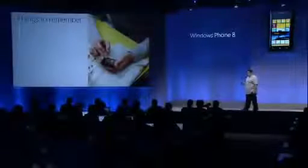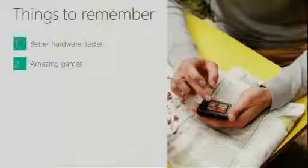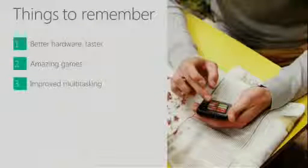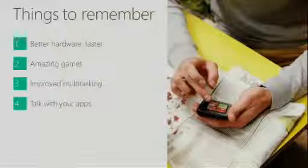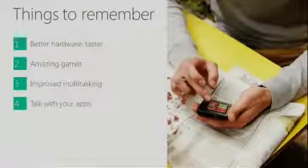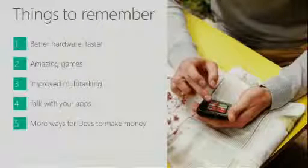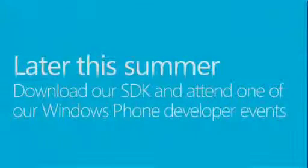There are six things I want you to remember from today. First, better hardware faster, because we have the same shared Windows core which allows hardware partners to leverage and build optimized drivers. Second, amazing games are coming to Windows Phone 8 because of native code support. Third, we are improving multitasking. Fourth, talk with your apps — we are providing a complete speech platform. Fifth, more ways for developers to make money with in-app purchase. And sixth, Windows Phone 8 is enterprise ready.